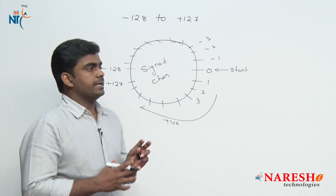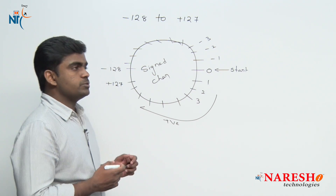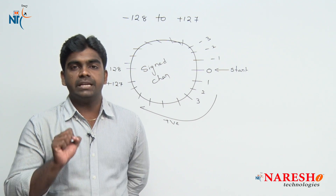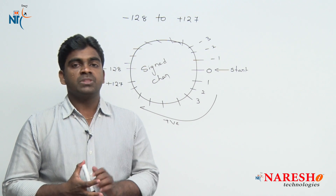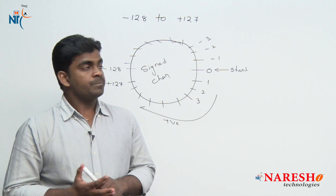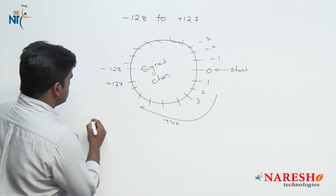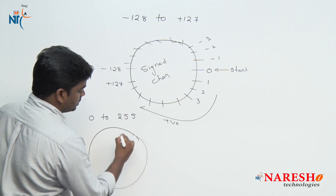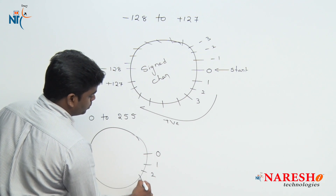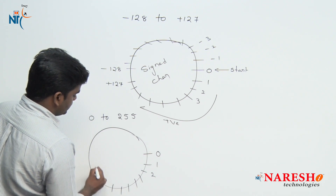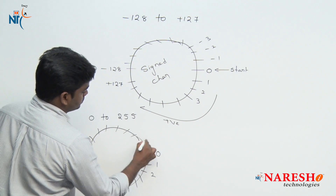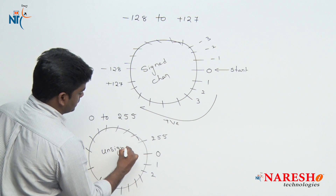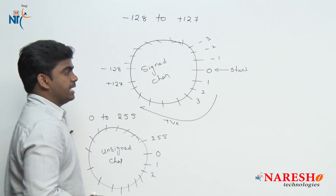First we will see examples on a signed character. In the declaration of a variable, if you are not specifying whether the variable is signed or unsigned, by default it is a signed variable. The unsigned character circle goes from 0 to 255, starting at 0, 1, 2 and so on up to 255.